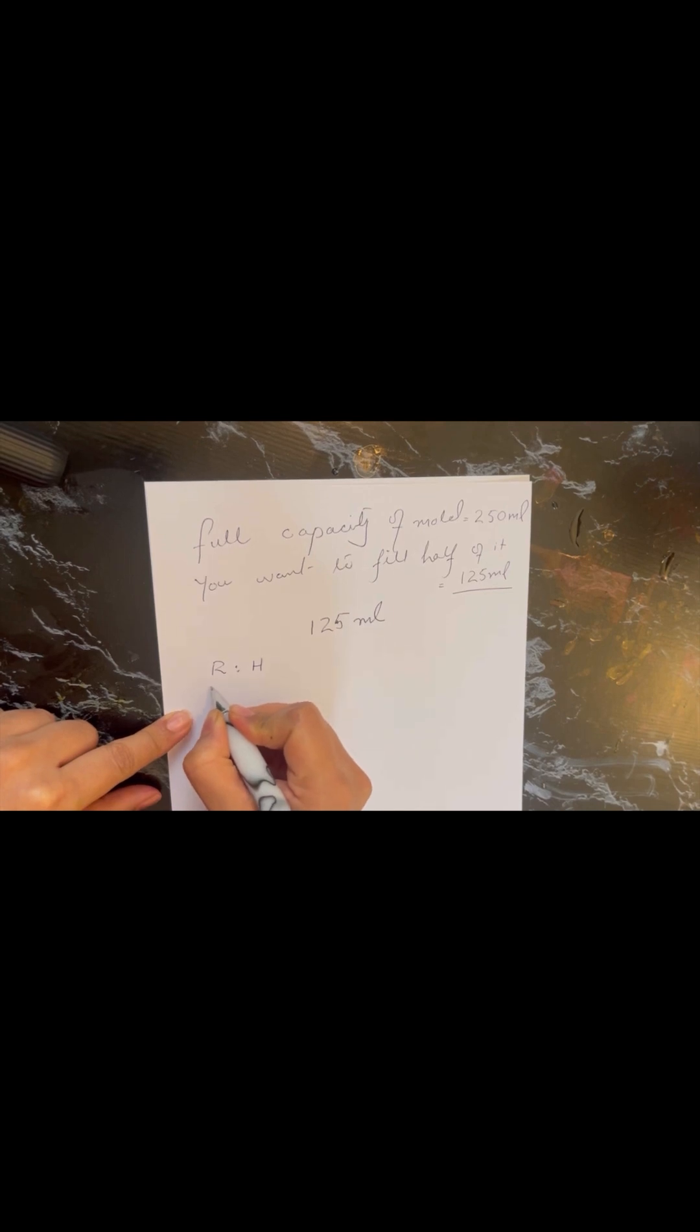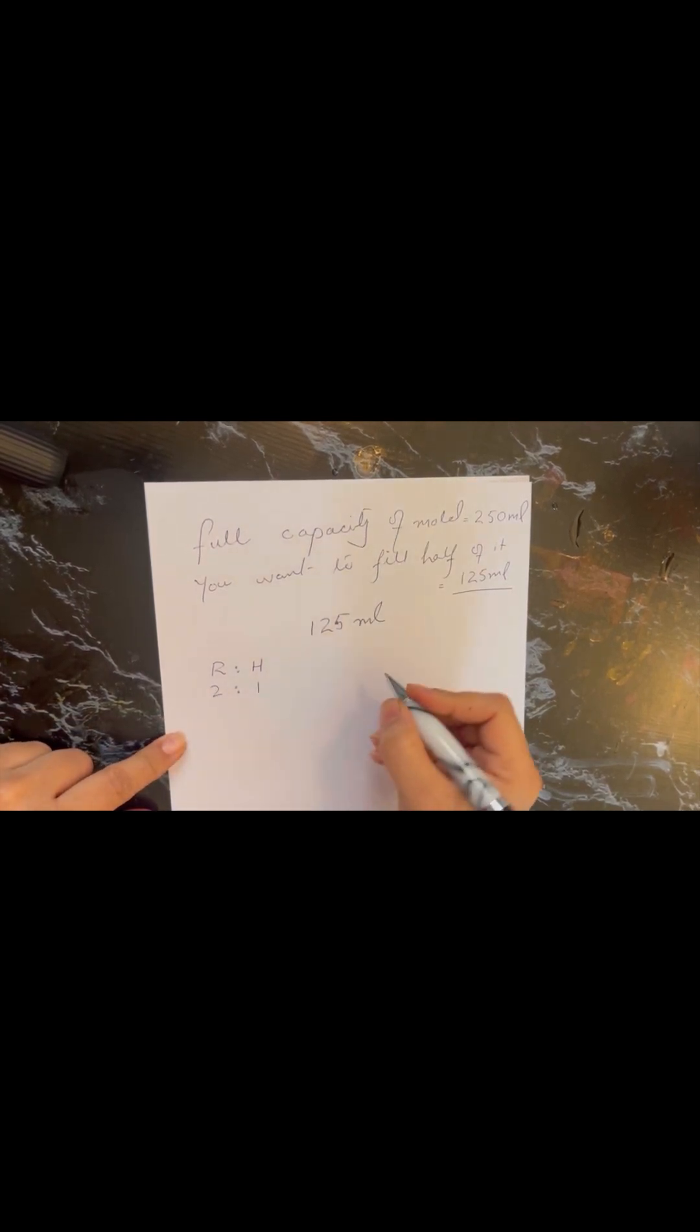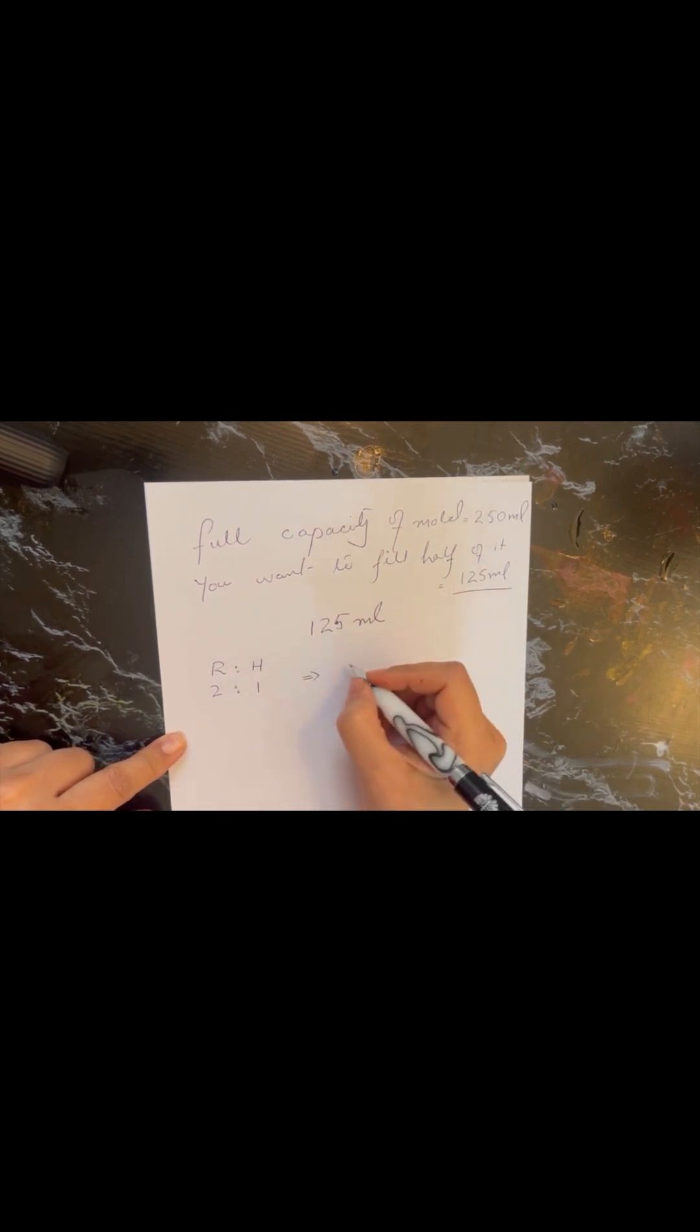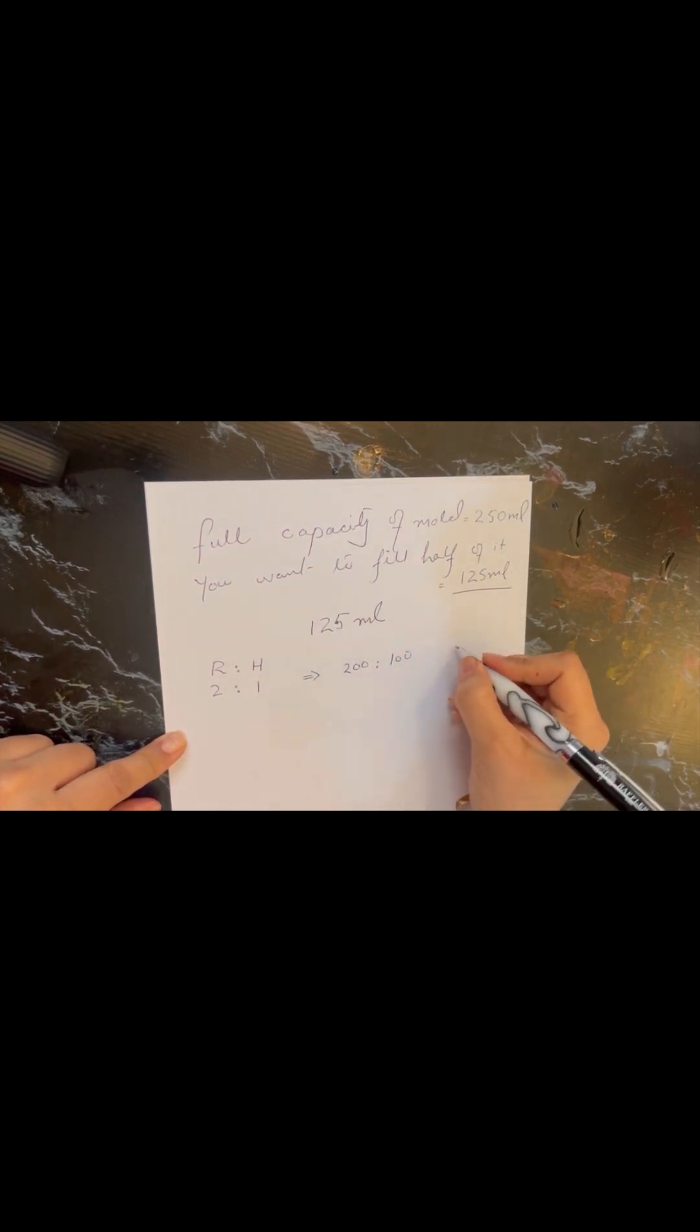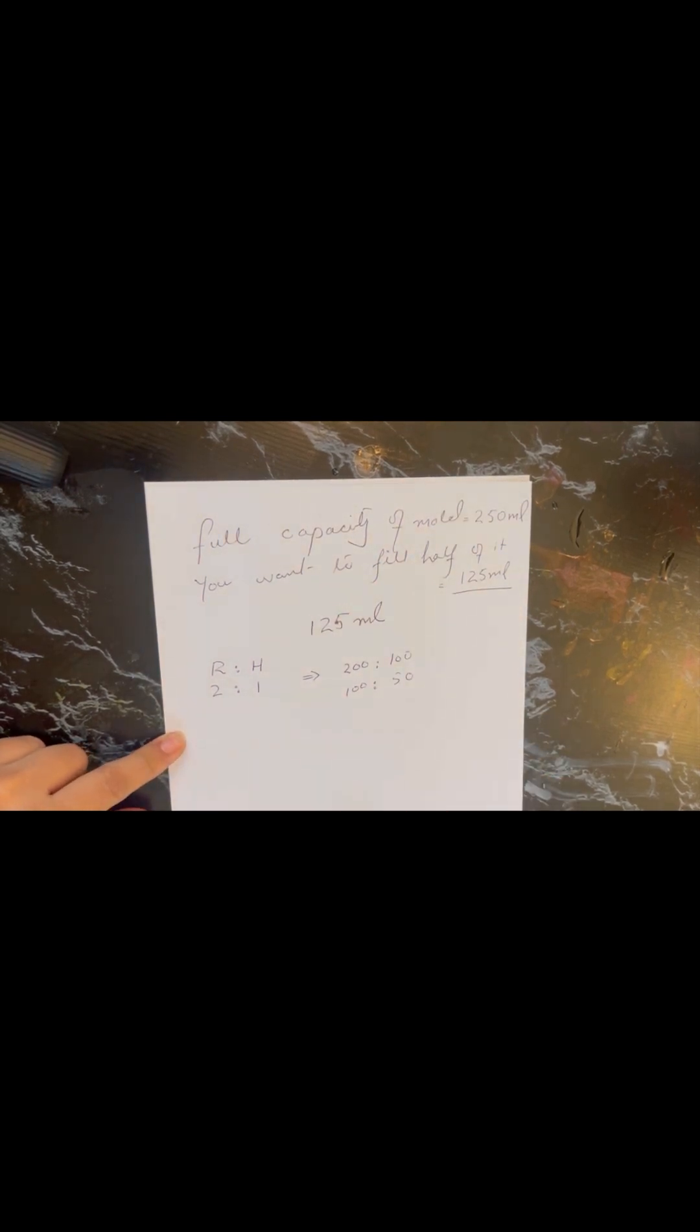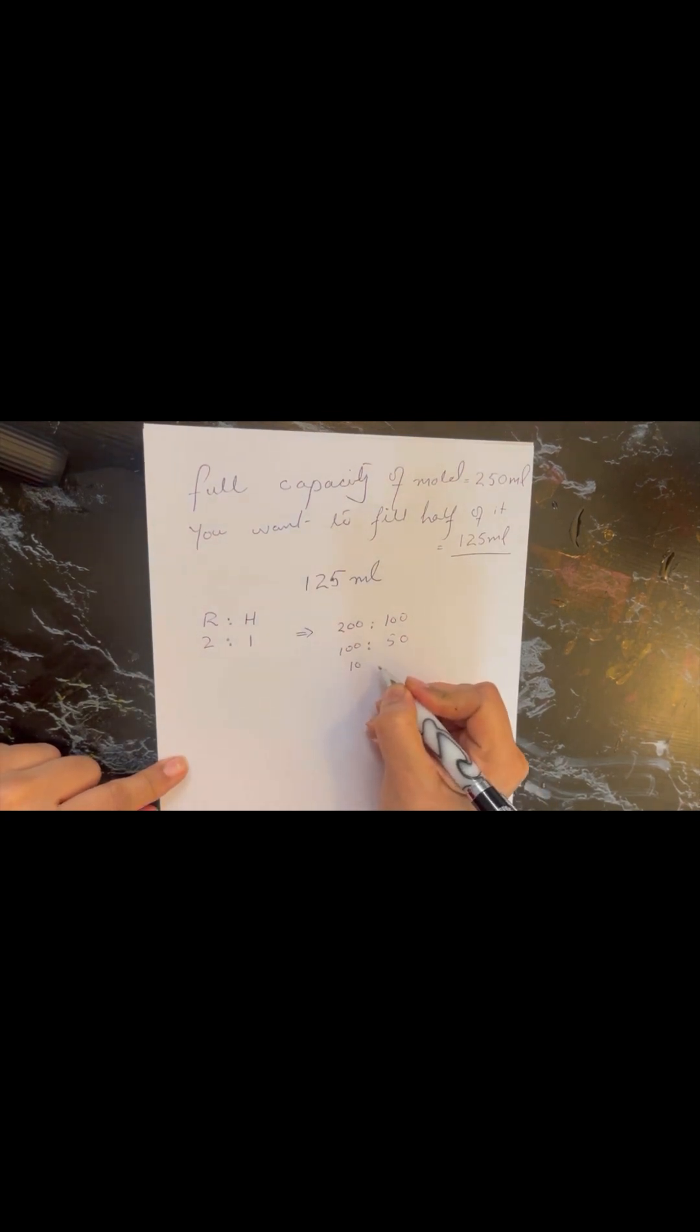So if it is 125 ml, we will be taking two parts of resin out of the three since it is two ratio one. This two ratio one is sometimes also mentioned as 200 grams ratio or sometimes it is also written as 100 grams to 50 grams or 100 to 50 ratio. They all mean the same, two ratio one in the simplified form. So don't get confused by these.